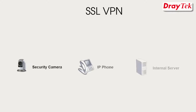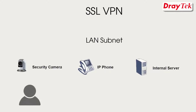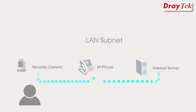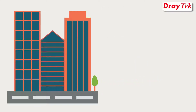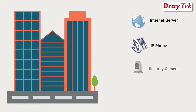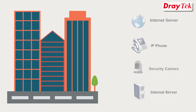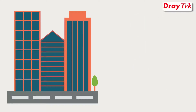SSL VPN allows the user to access the LAN subnet of the Vigor router. Usually, for security reasons, a company may only allow access to the internet server, IP phone, or security camera for the internal network only, so users from the outside will not have access to the internal network of the company, including servers or services.